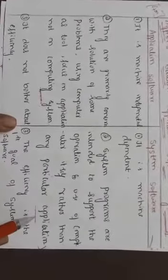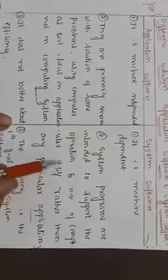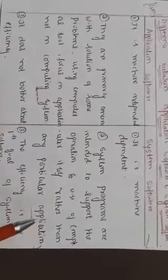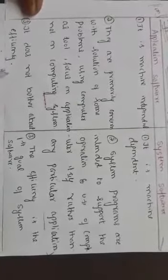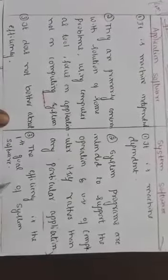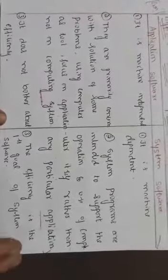System programs are intended to support the operation and use of computer itself rather than any particular application. System software is mainly dependent on what type of operations are available in system software. It does not bother about efficiency in application software side. The main goal of system software is efficiency.